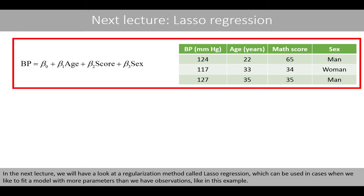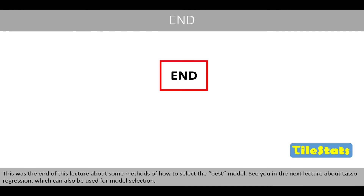In the next lecture, we'll have a look at the regularization method called lasso regression, which can be used in cases when we like to fit a model with more parameters than we have observations, like in this example. This was the end of this lecture about methods of how to select the best model. See you in the next lecture about lasso regression, which can also be used for model selection.